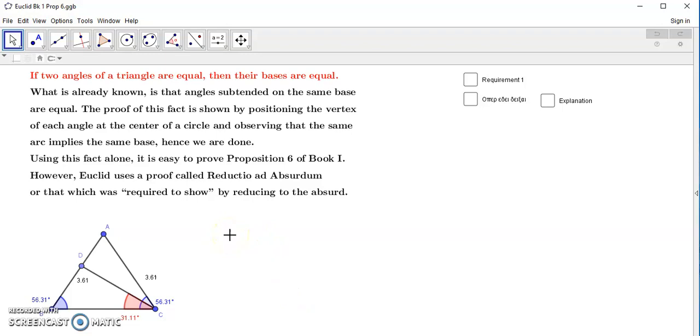Now, what is already known is that angles subtended on the same base are equal, and the proof of this fact is easy to show by positioning the vertex of these angles, in other words, this vertex, at the center of the circle and observing that the same arc obviously implies the same base.